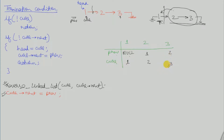Node 3 is called with current value of 3. Since 3 is the last node, the second termination condition runs: if not current.next — the next pointer of 3 is null — so head is set equal to current, making node 3 the new head. Then current.next is set equal to prev, and since the prev value for node 3 is node 2, the next pointer of 3 becomes 2, and then it returns.